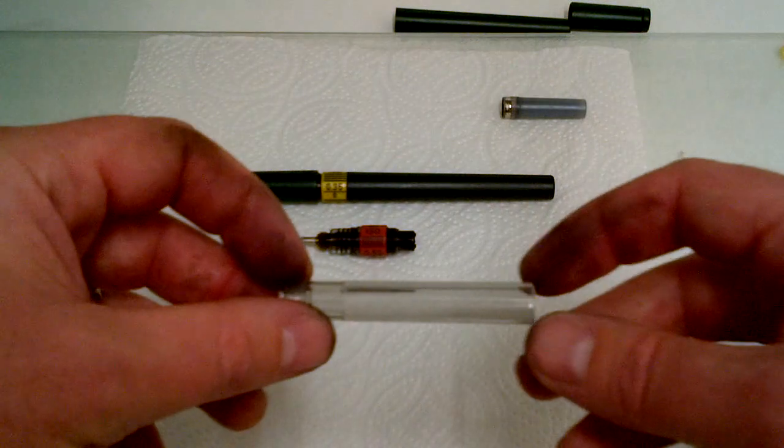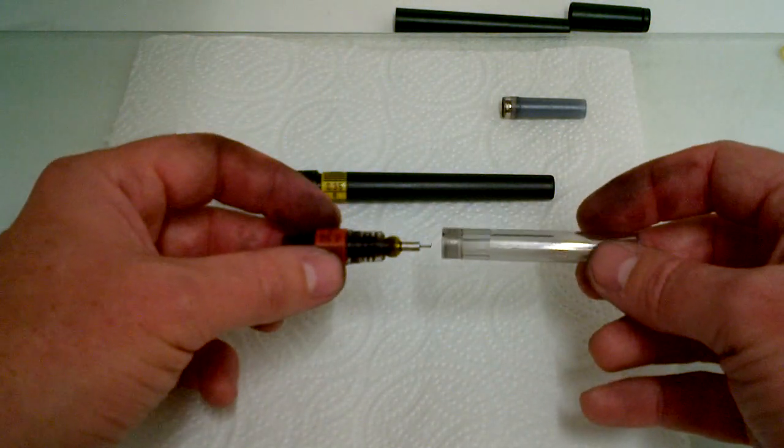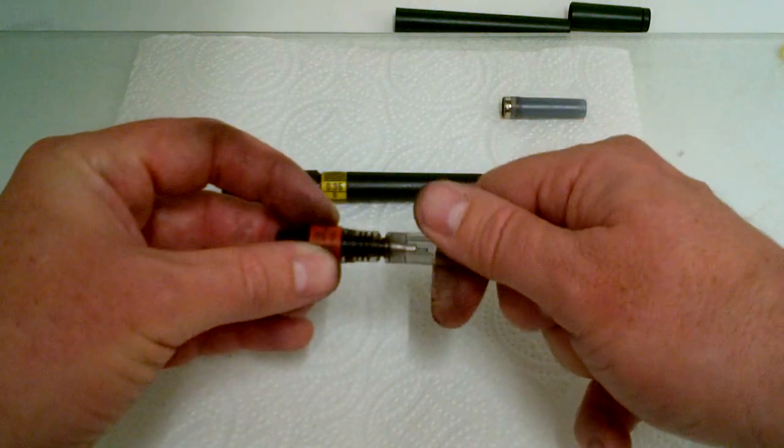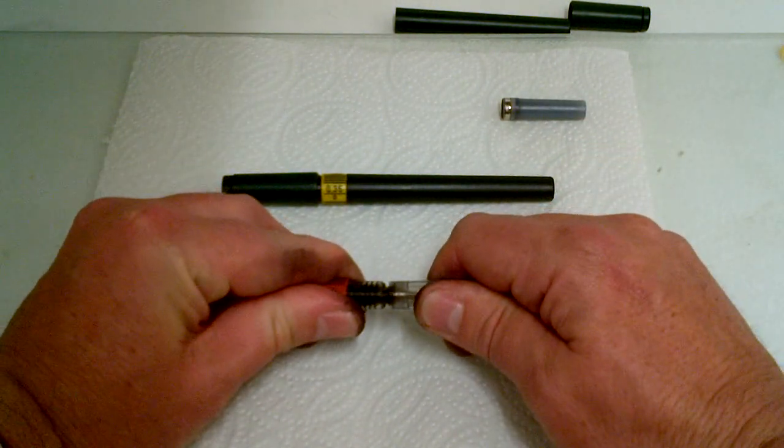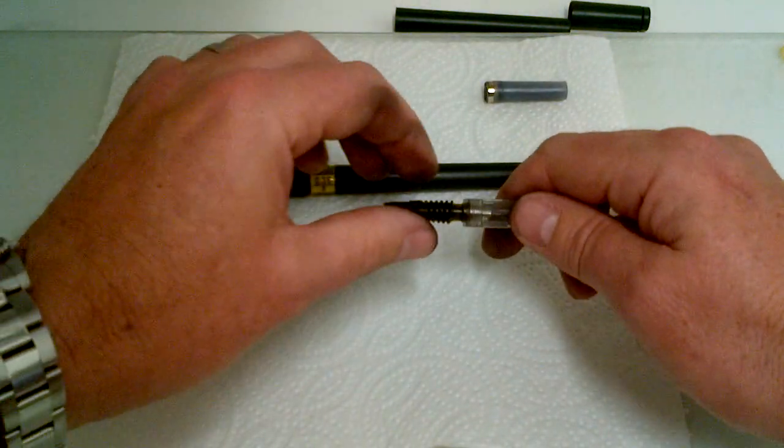I've got a tool here which came with a new pen which is very useful. It screws onto the end of the nib and allows the nib to be pulled out. If you don't have one of these tools, you can just use a cloth or even pliers very carefully.